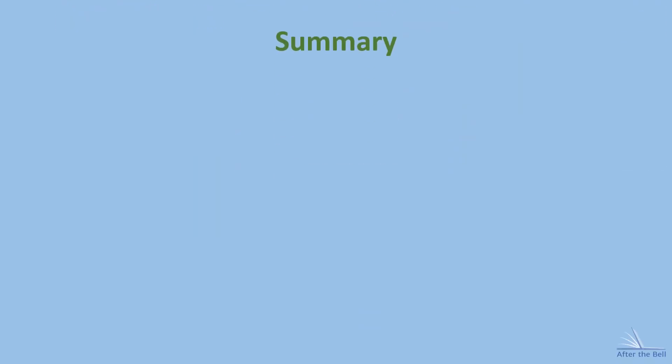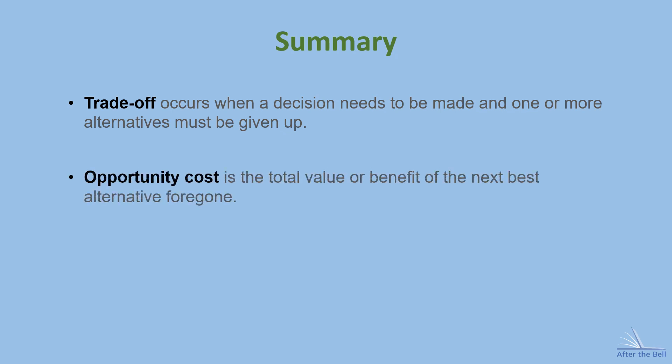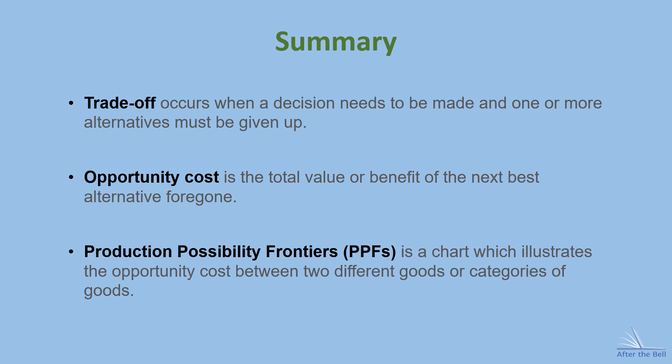So that's the end of this video where we've covered trade-offs, which is when you're faced with a decision between different alternative options, and this leads into the idea of opportunity cost, which is the actual thing and the benefits that you have to sacrifice once you've made this decision. And finally I took you through production possibility frontiers which give us a graphical picture of opportunity cost by comparing production decisions between two different goods or categories of goods.